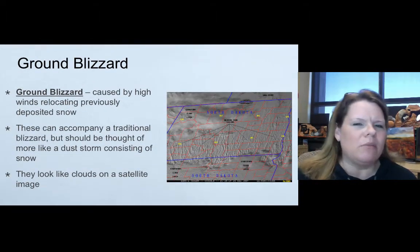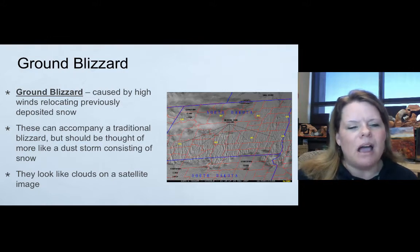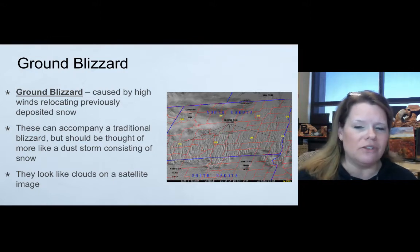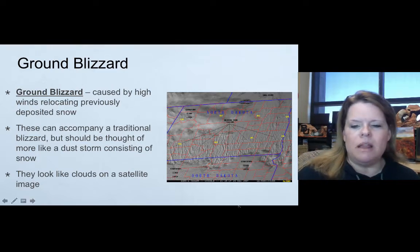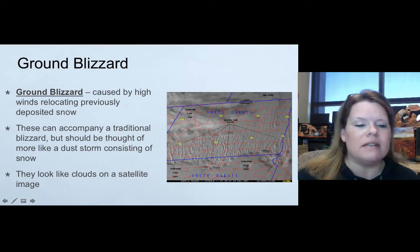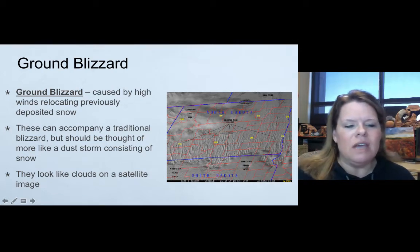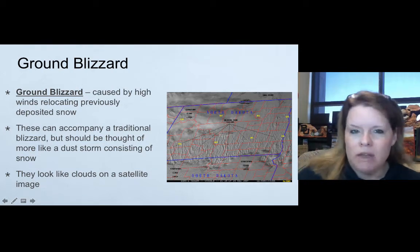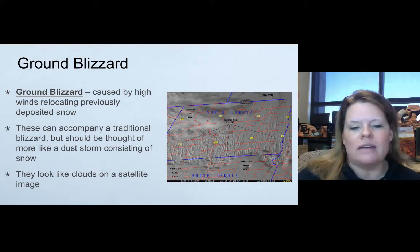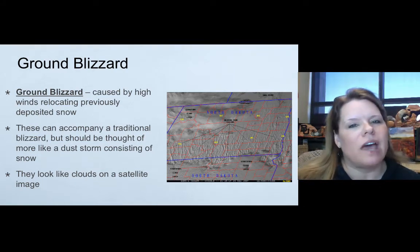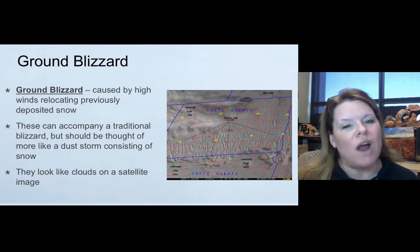A ground blizzard is caused by high winds relocating previously deposited snow. Snow mounds migrate, so these can accompany a traditional blizzard but should be thought of more like a dust storm consisting of snow. They look like clouds on satellite but they're actually snow on the ground.